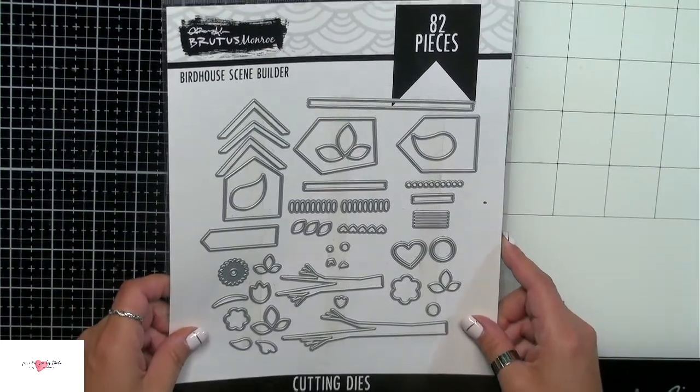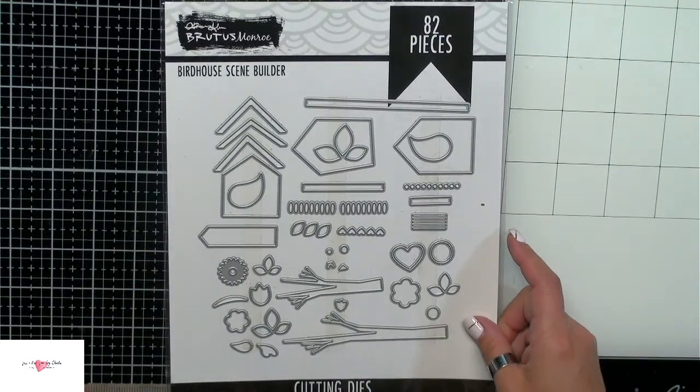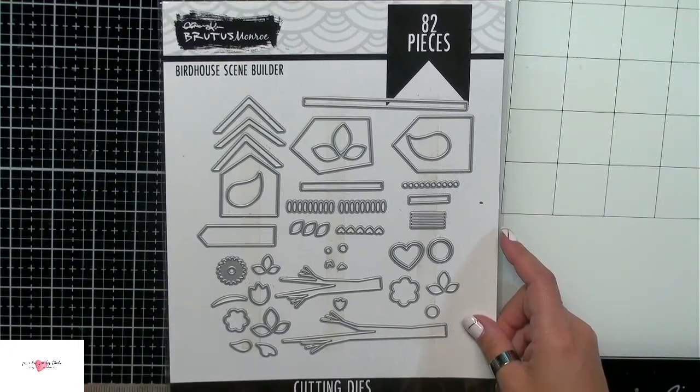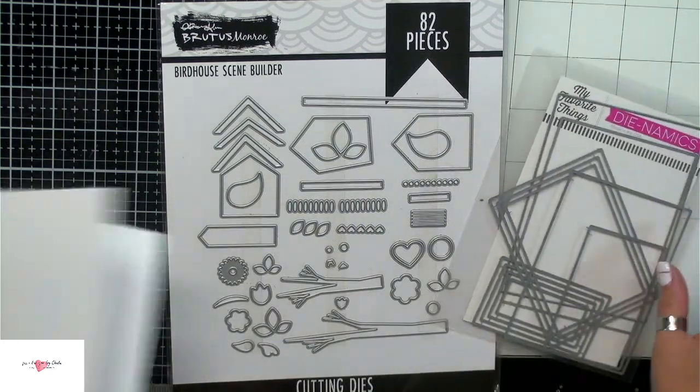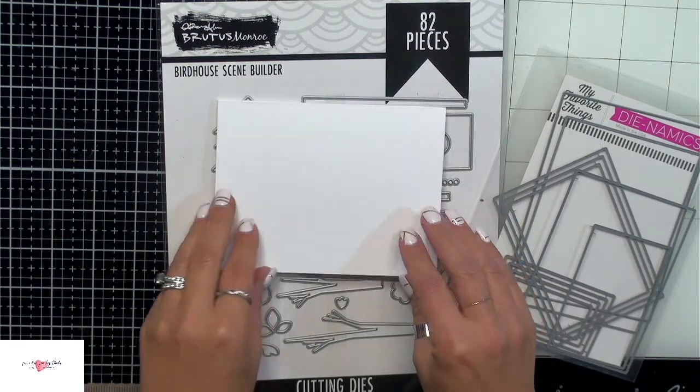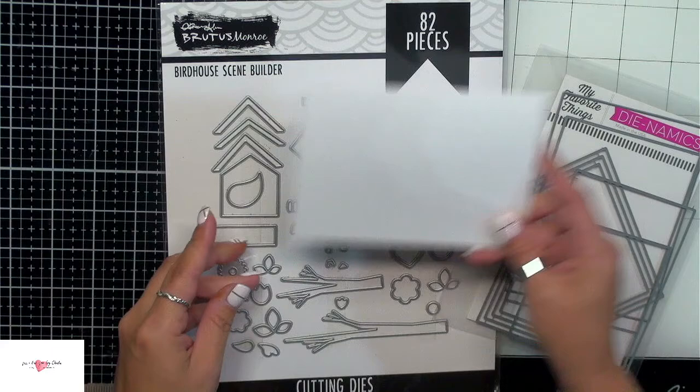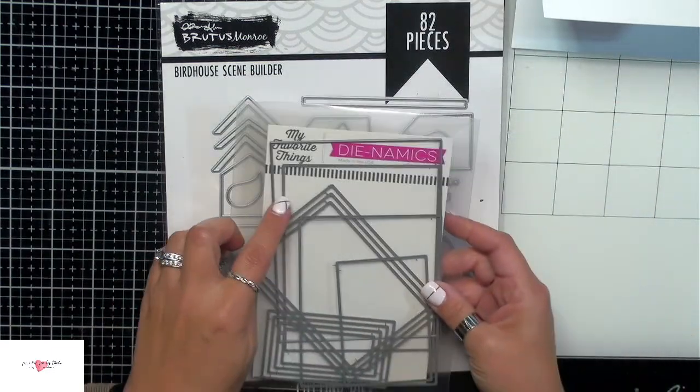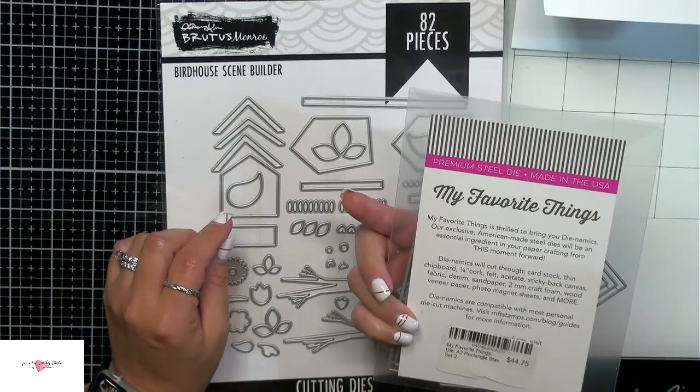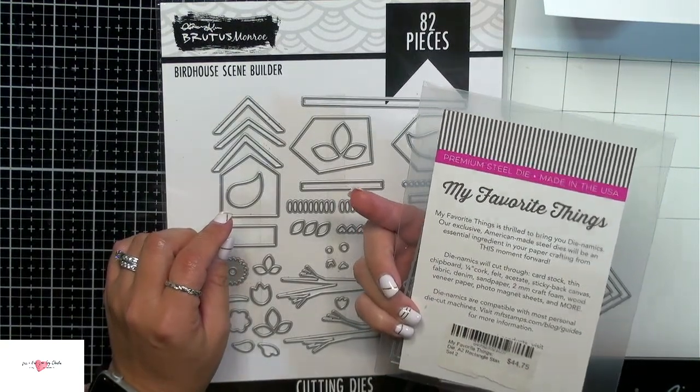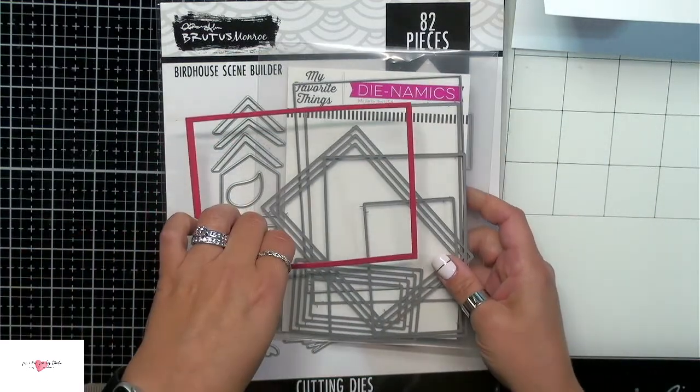To save time, I did my die cutting off screen because I also used a couple other products. So I created a frame. I'm going to be using an A2 size card and orientate it landscape way. I've used two of these dies from My Favorite Things, the A2 rectangle stacks, just to create a red border.